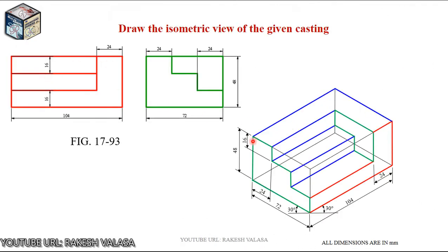This is the final solution for the given question. That is to convert the given orthographic view into isometric view of a given casting. I hope this is very clear to everyone.